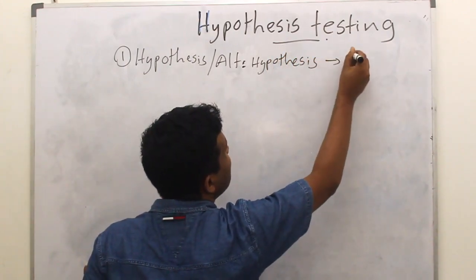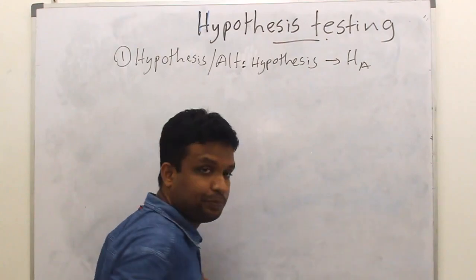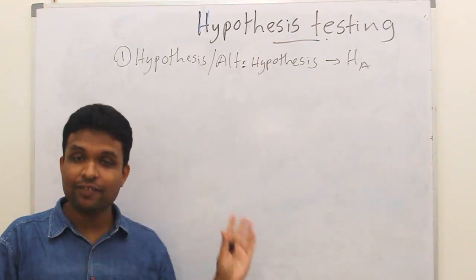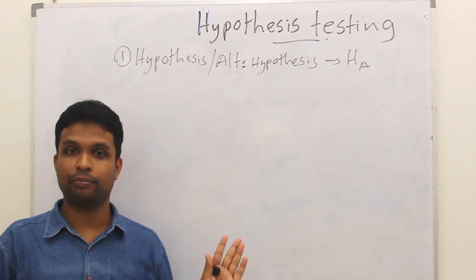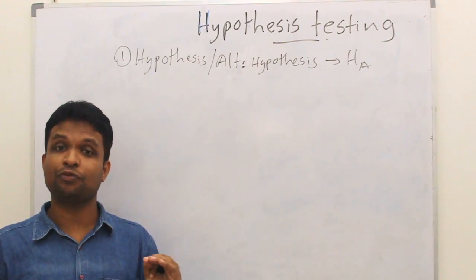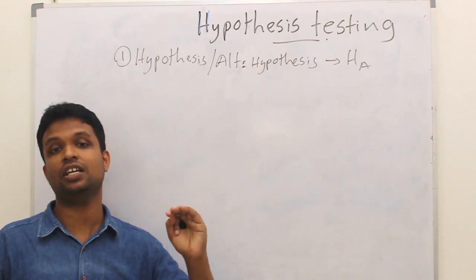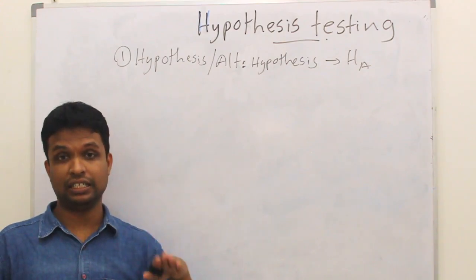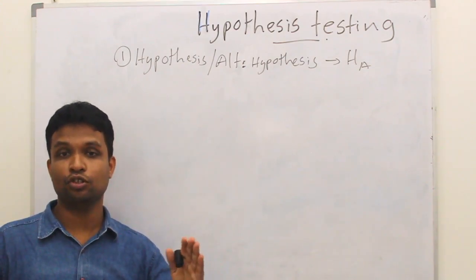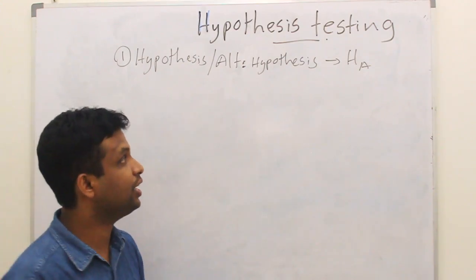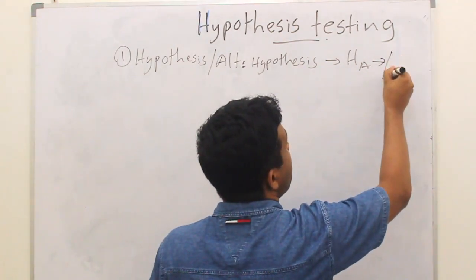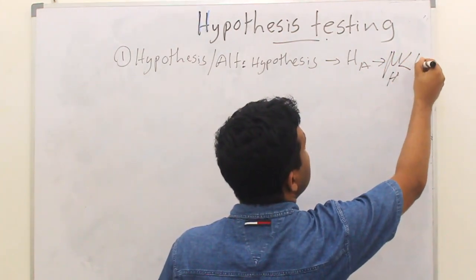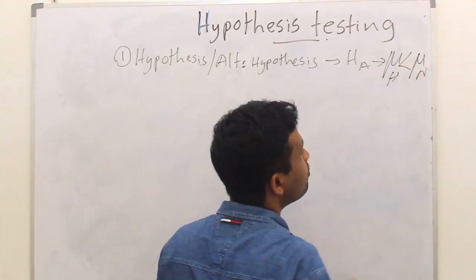We denote that as H_A. We will start with an example. In the previous example, the birth weight of babies born to HIV-infected mothers is significantly less in comparison to the normal birth weight. So this is: mu_H is significantly less than mu_normal.